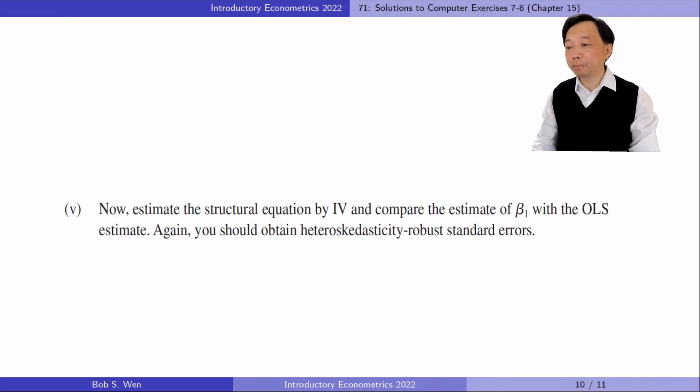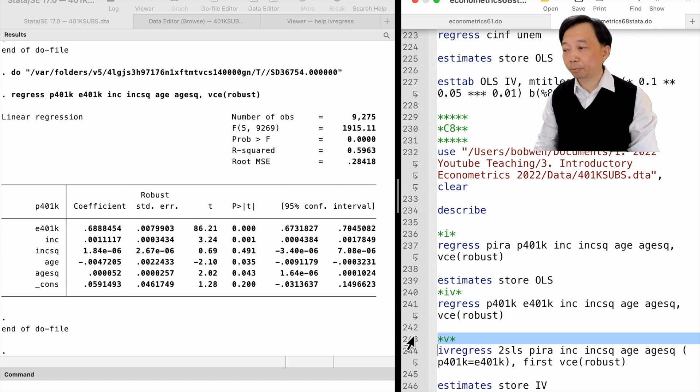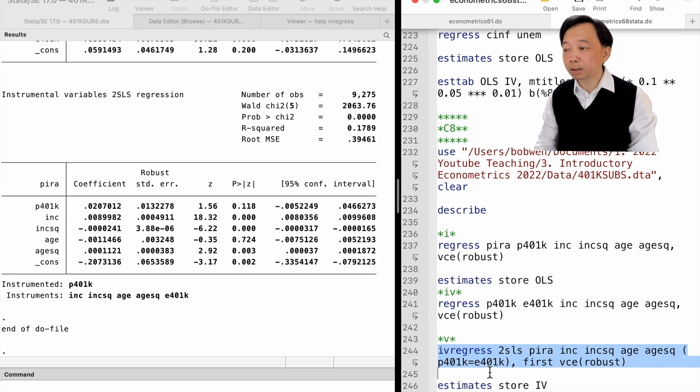In part 5, we estimate the structural equation by IV and compare the estimate of beta 1 with the OLS estimate. Again, you should obtain heteroscedasticity robust standard errors. We estimate the linear probability model by IV and OLS and compare the estimate of beta 1 in the table.